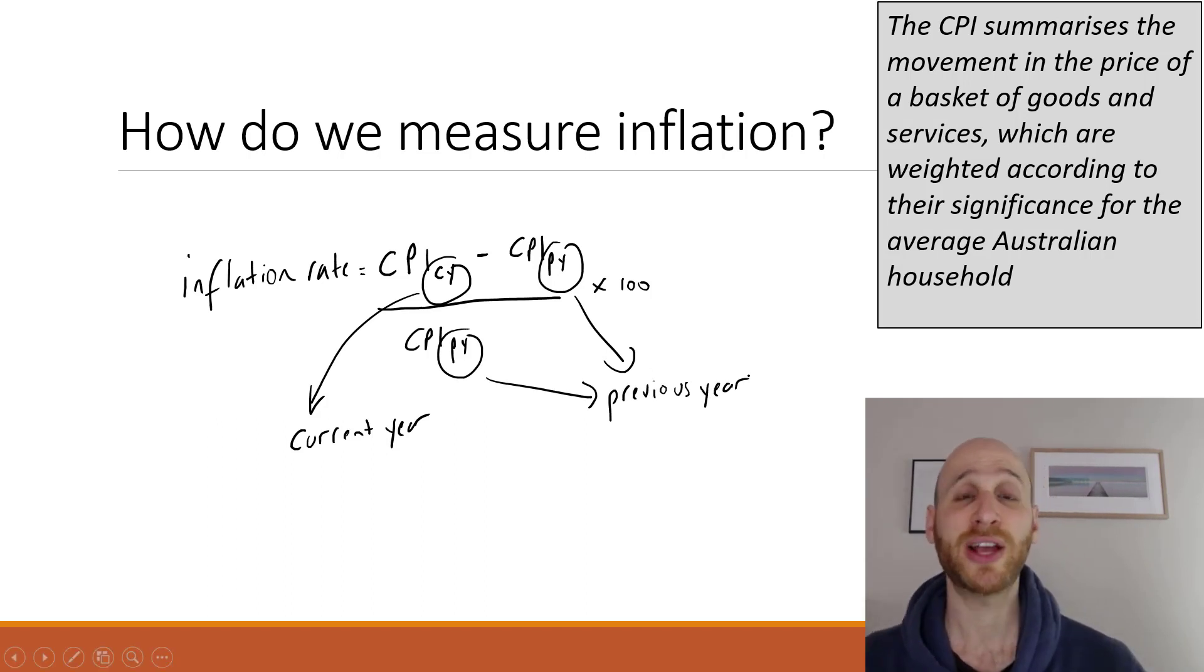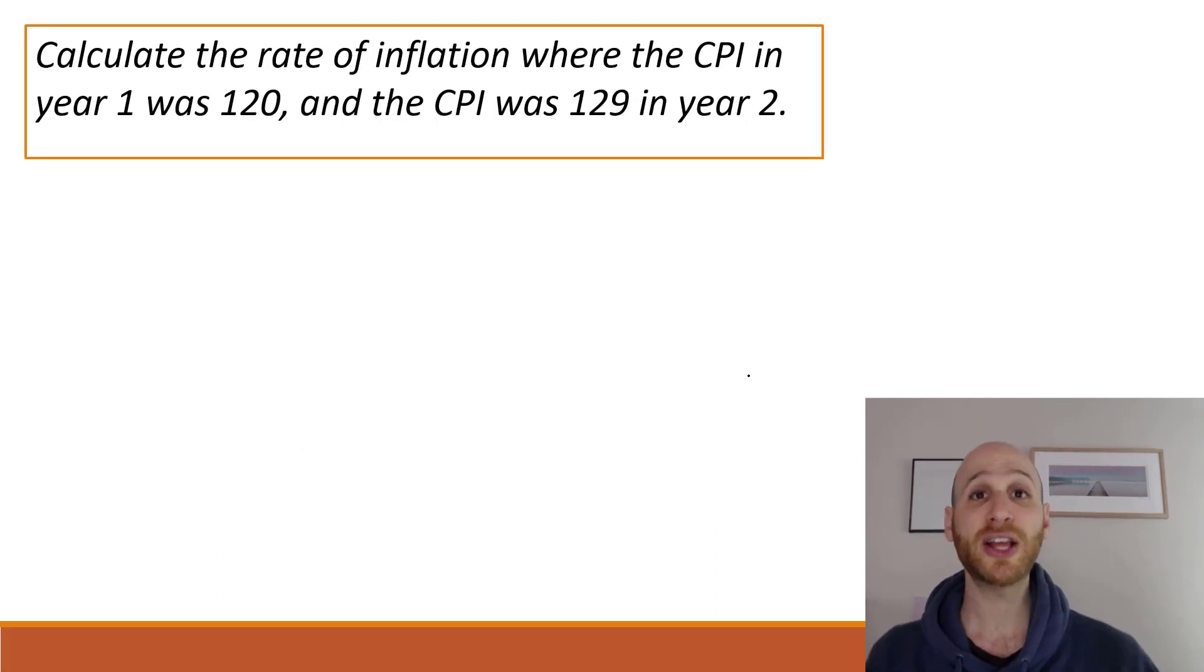So the inflation rate is simply the CPI for the current year minus the CPI for the previous year over the CPI for the previous year. You might have spotted it. It's just a simple percentage change calculation. But that's how we measure inflation between different years. So let's do an example.